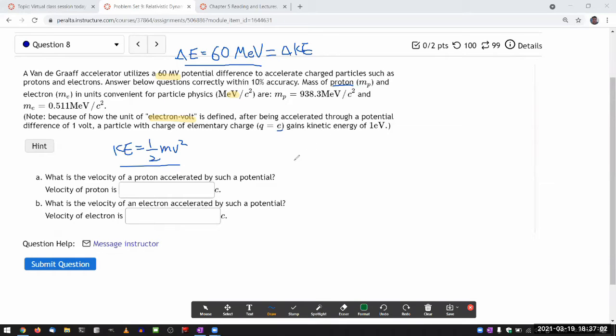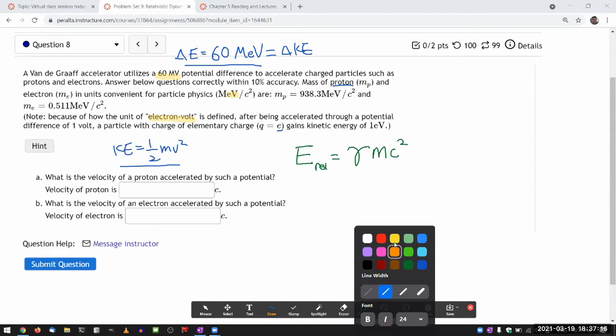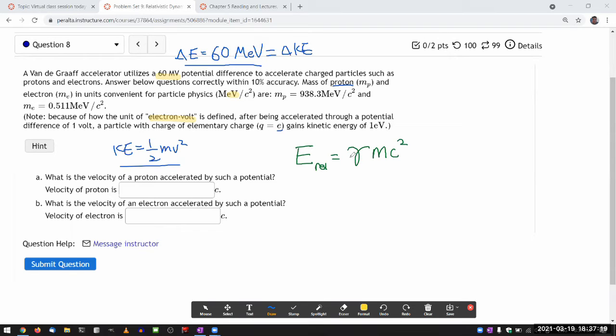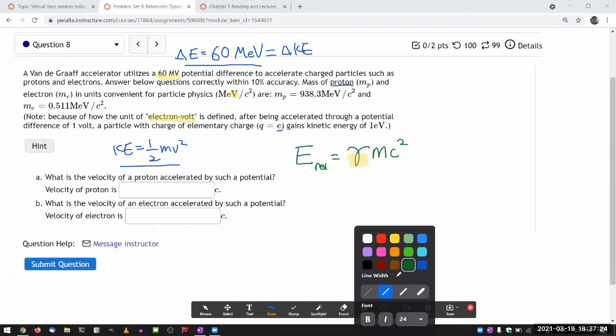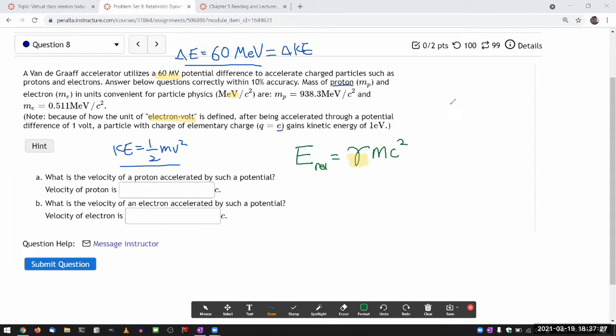which is that the expression for total relativistic energy is gamma mC squared. And what I want you to start developing is this sense, intuition, that whenever you have gamma, you have speed, because whenever you have gamma, this is the algebraic relationship you can go through: beta being defined as v over c, gamma is defined as one over square root of one minus beta squared. And in that relationship,